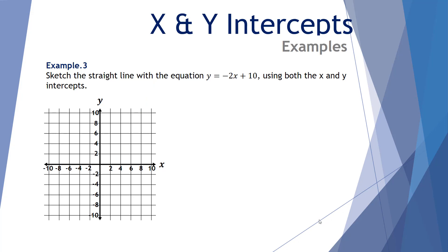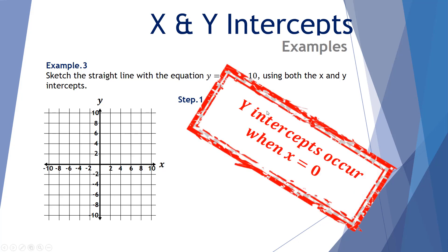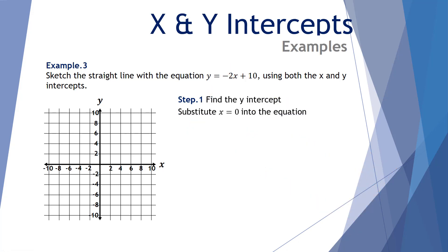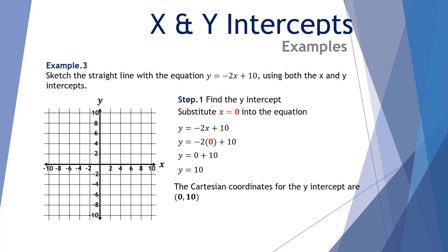Example three, our final example: sketch the straight line with the equation y equals negative 2x plus 10 using both the x and y-intercepts. Step one, find the y-intercept. The y-intercept occurs when x equals 0. Substitute x equals 0 into the equation y equals negative 2x plus 10, and we're left with y equals 0 plus 10, which gives y equals 10. The Cartesian coordinates for the y-intercept are (0, 10). So there's our first point — x equals 0, y equals 10.